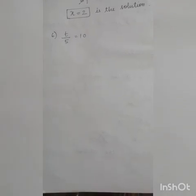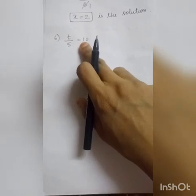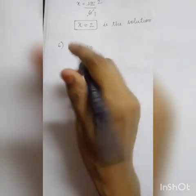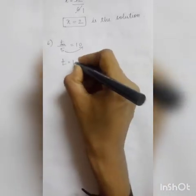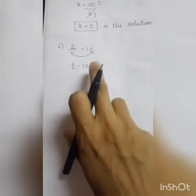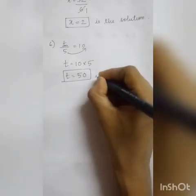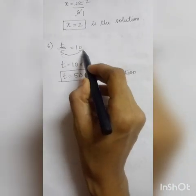Next is your 6th question: t divided by 5 equals 10. The variable is t, so we are finding the value of t. I keep t alone on this side and bring 5 to the other side. Since 5 is dividing here, if it goes to that side it becomes multiplication. So t equals 10 into 5, which is 50. So t equals 50 is the solution for this equation.